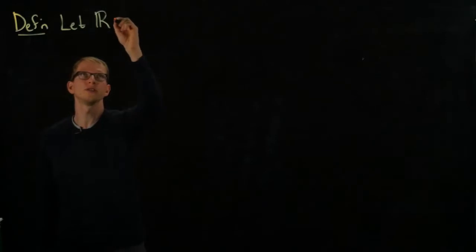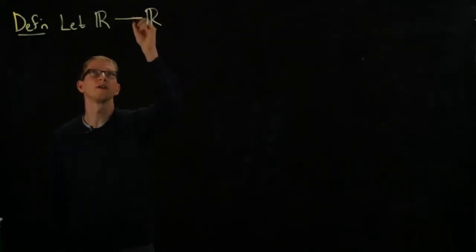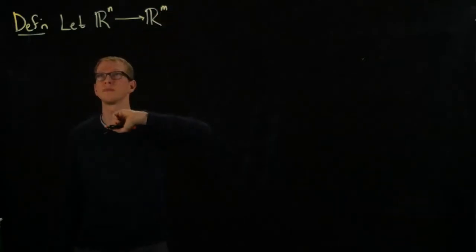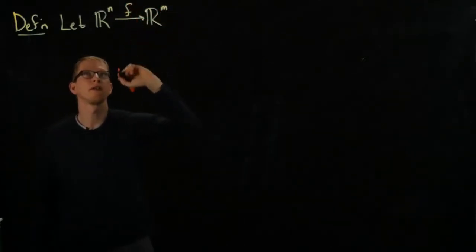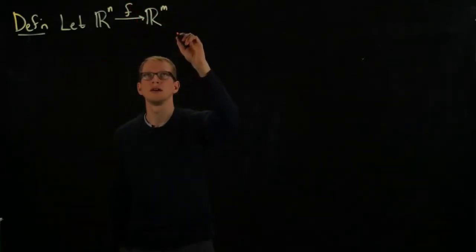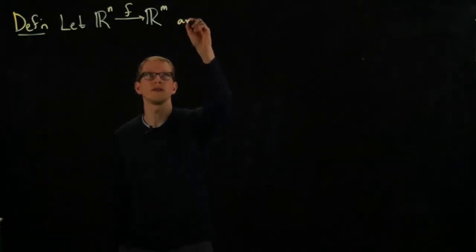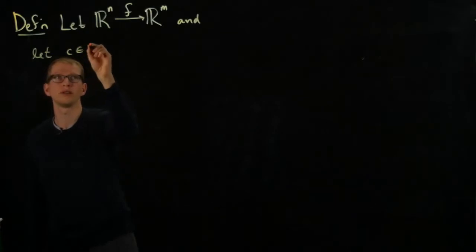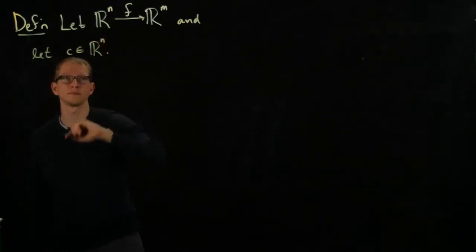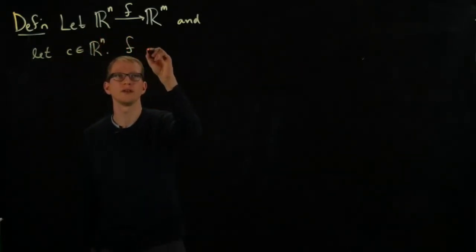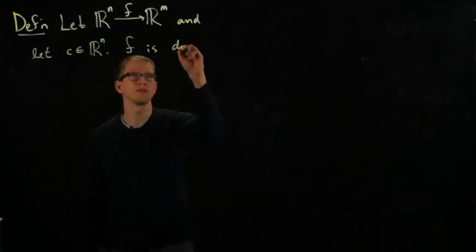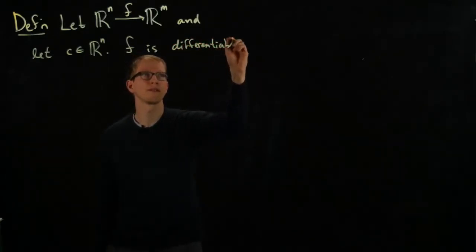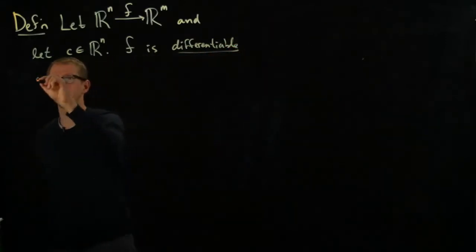So we consider a function from R^n to R^m, and let C be a point in R^n. F is said to be differentiable at C if and only if there exists a linear transformation.